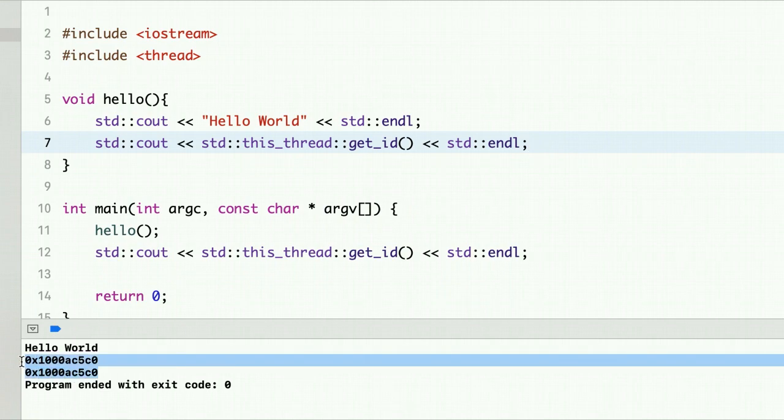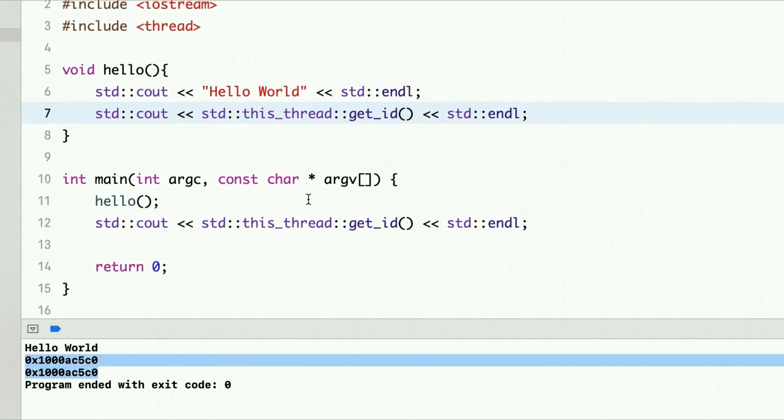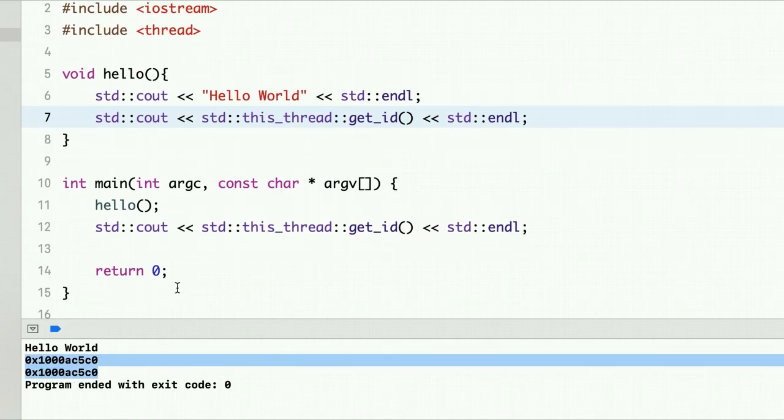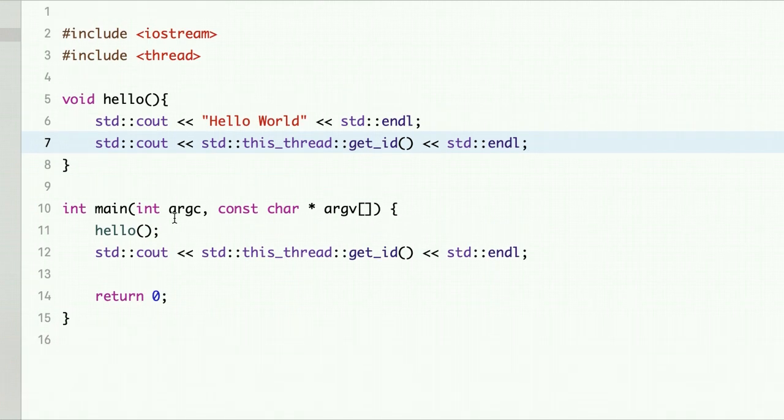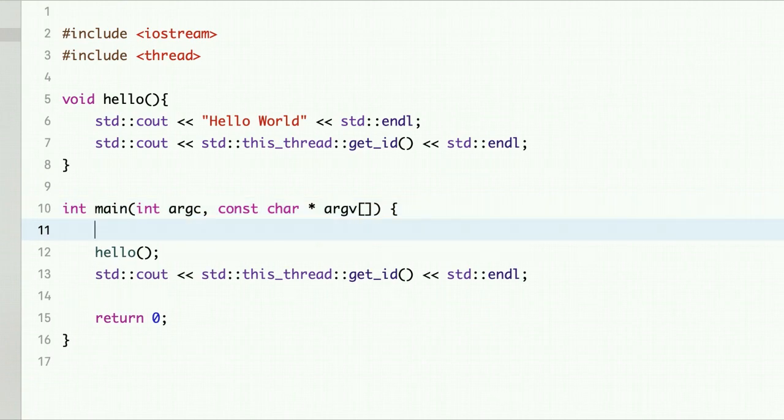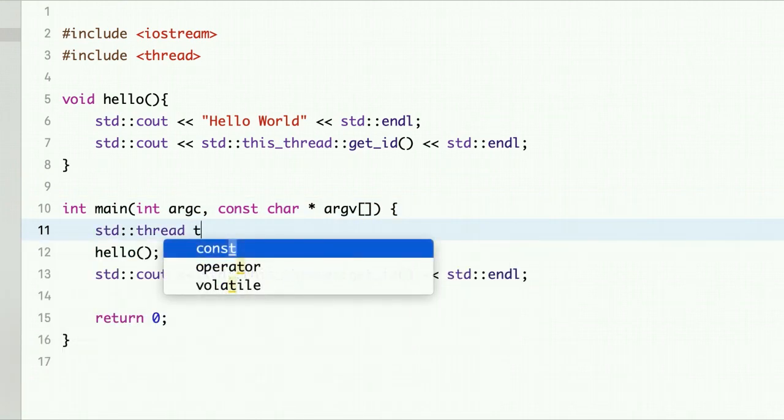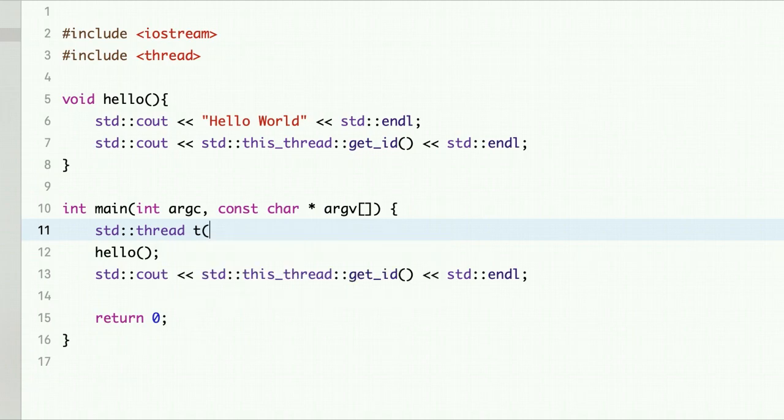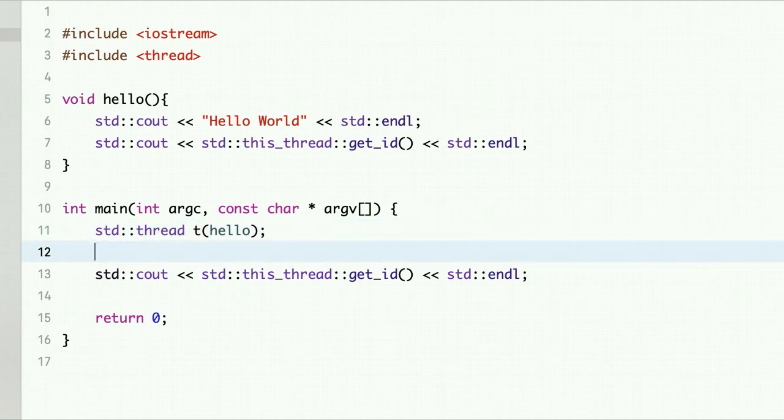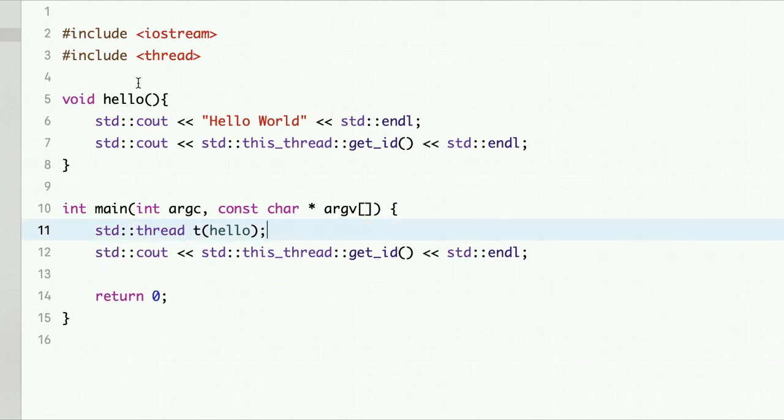So you see that both the thread IDs are same. Now we will make this multi-threaded. Here we will create a thread T and we need to assign a function to it - the function that the thread needs to run. And now we don't need this because we will run hello from a separate thread.